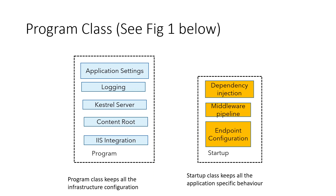The program class is seldom changed over the lifetime of a project — once the project template is created you hardly ever need to change it. The program classes for two different ASP.NET Core applications will generally be the same. However, the startup classes between two applications differ significantly. You update the startup class whenever you add a NuGet package or a new dependency to your project.